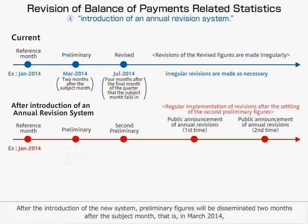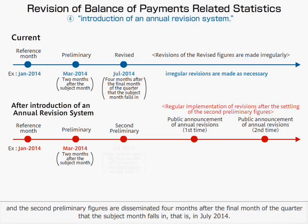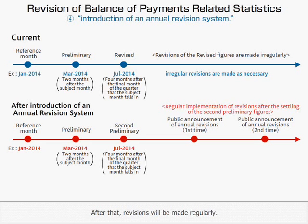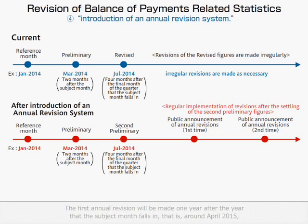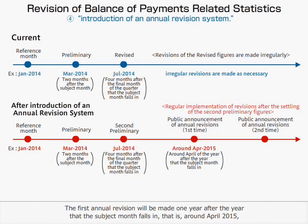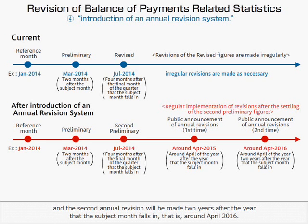After the introduction of the new system, preliminary figures will be disseminated two months after the subject month, that is, in March 2014. Second preliminary figures are disseminated four months after the final month of the quarter that the subject month falls in, that is, in July 2014. After that, revisions will be made regularly. The first annual revision will be made one year after the year that the subject month falls in, that is, in April 2015, and the second annual revision in April 2016.